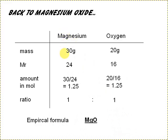So if we go back to the magnesium oxide, we had 30 grams of the magnesium, 20 grams of the oxygen. Taking into account the relative masses of these, of 24 and 16, we can work out the amount in mole by taking the mass, dividing it by the relative mass, do that in both cases, and in both cases we come out of 1.25. So in terms of atoms, the ratio is 1 to 1, and therefore we'd say the empirical formula of this compound is MgO.